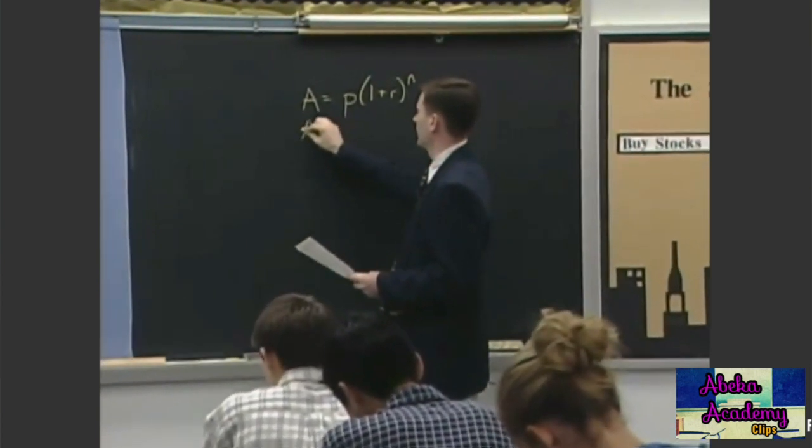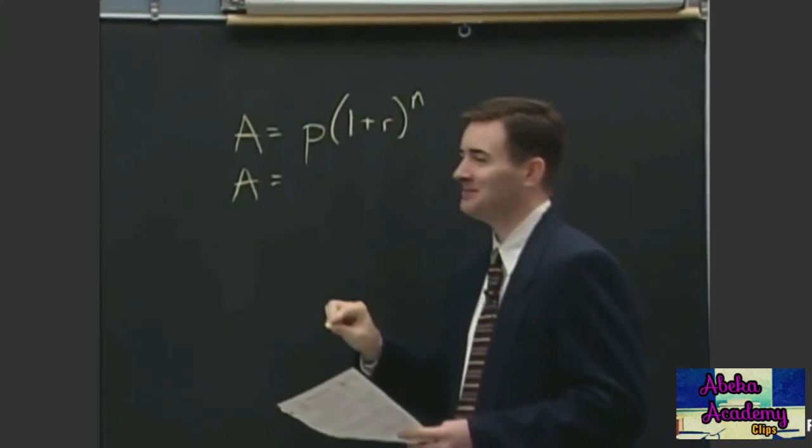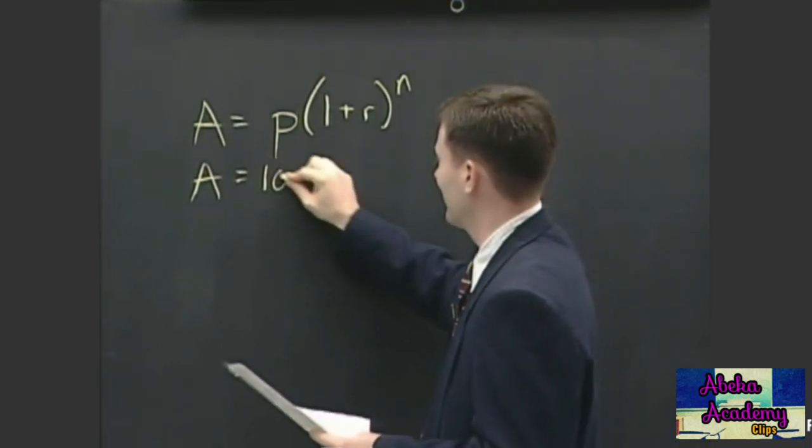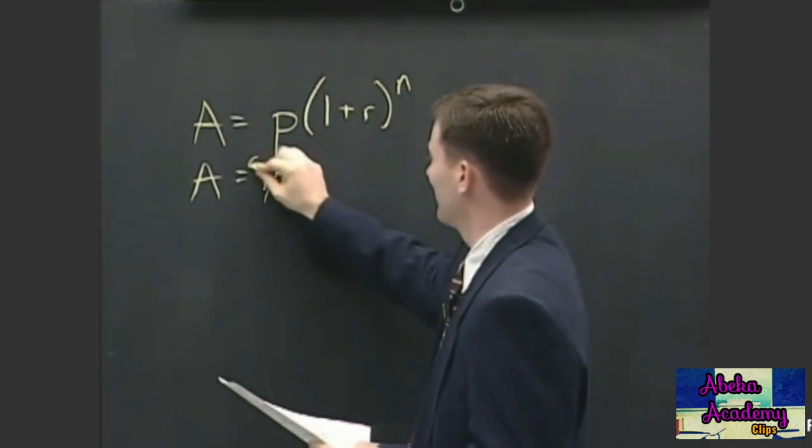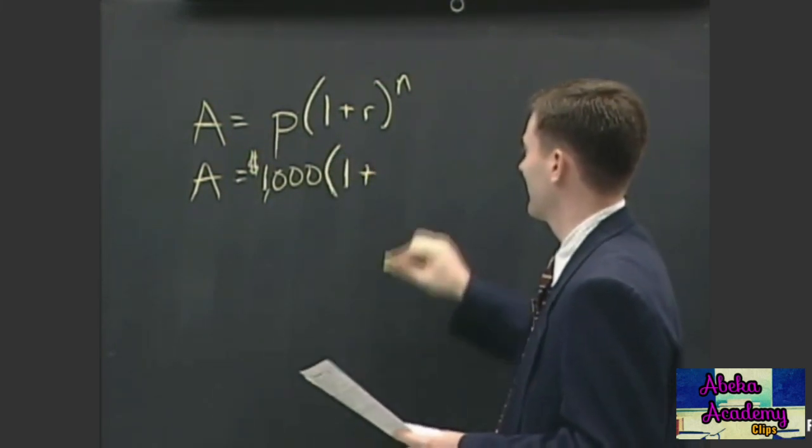I equals PRT... never mind, you got the formula. Okay, the principle would be one thousand dollars. It'd be one thousand, okay, times one plus point zero four.